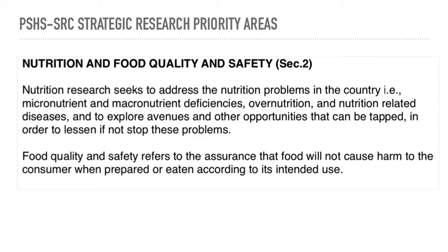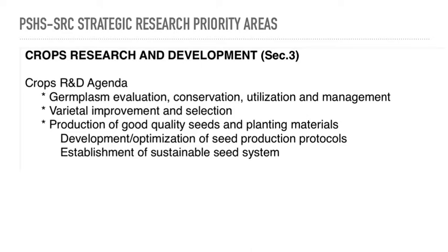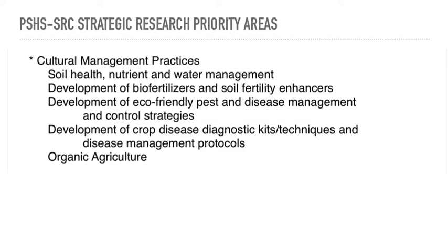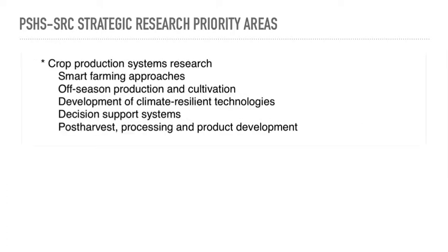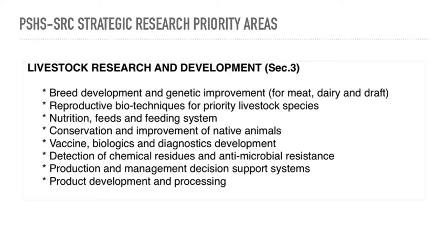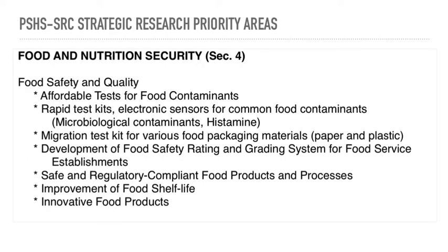Nutritional and food quality and safety, nutritional studies — those are options. Crops — I think it's difficult to do for Research 1, so let's skip that. Cultural management, crop production, livestock research — also difficult. Vaccine development — nope, let's skip. Food and nutrition security, rapid test kits — nope. So I'm going to focus on research areas that I think can actually be done by you guys.